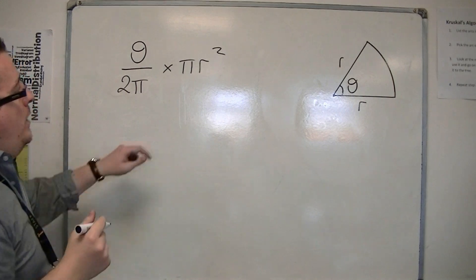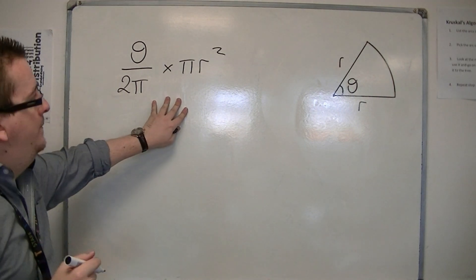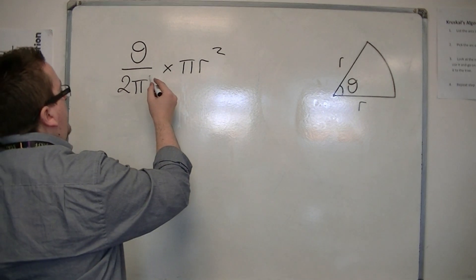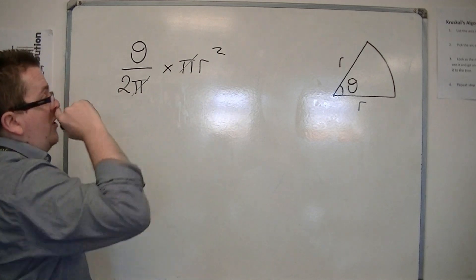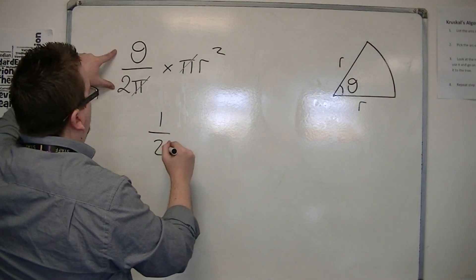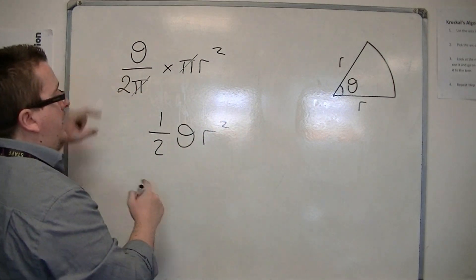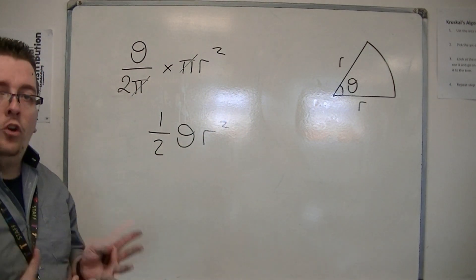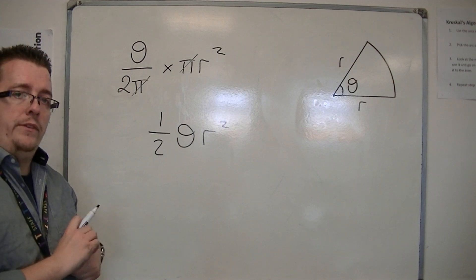then we get a slightly different formula, because those pis cancel each other out, and you're left with one-half theta r squared, and that is the area of a sector in radians.